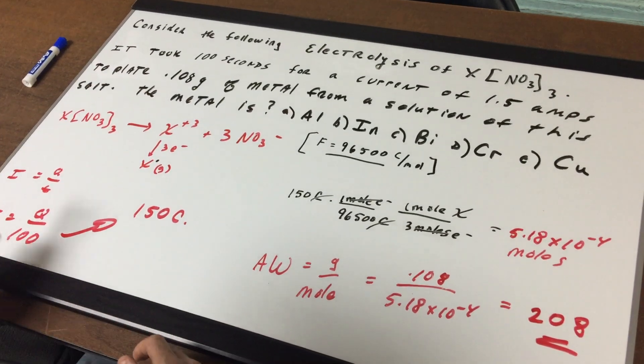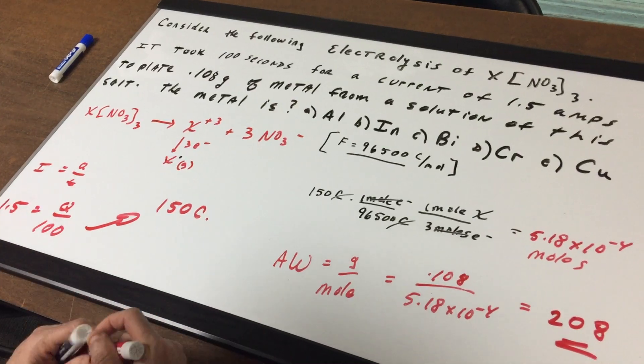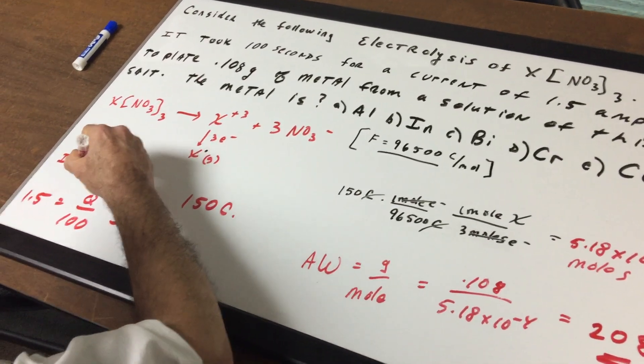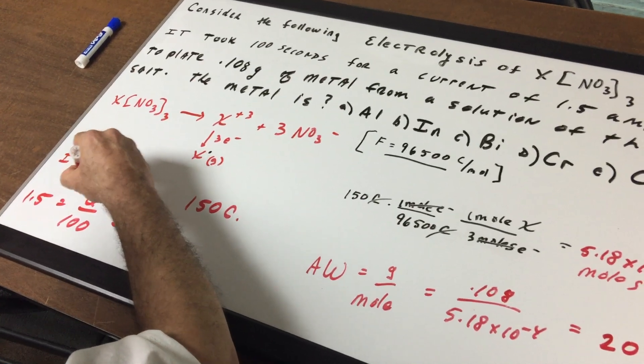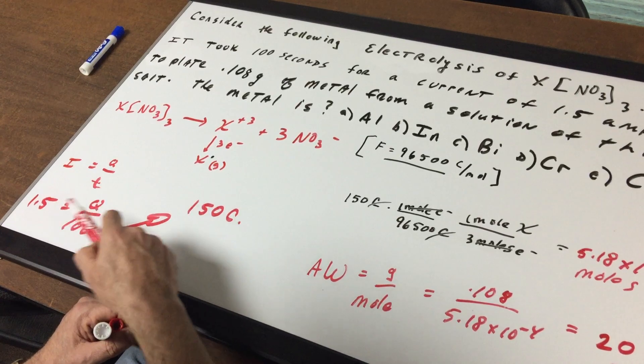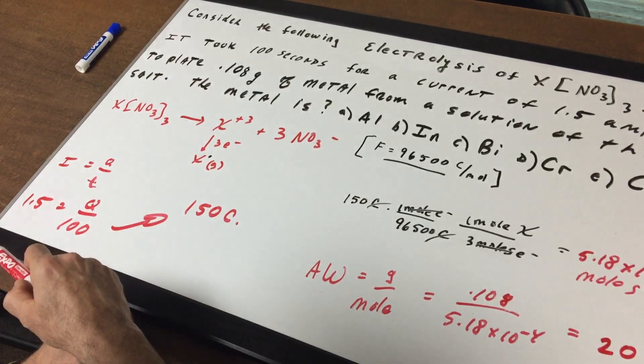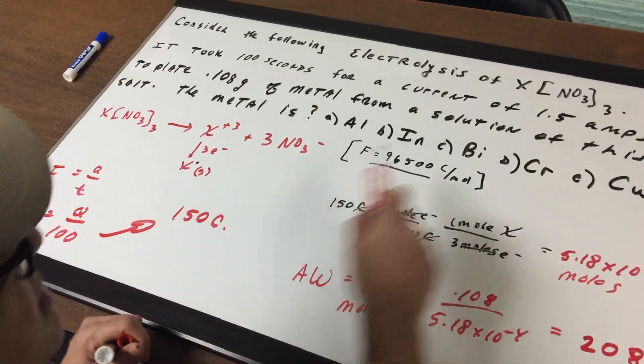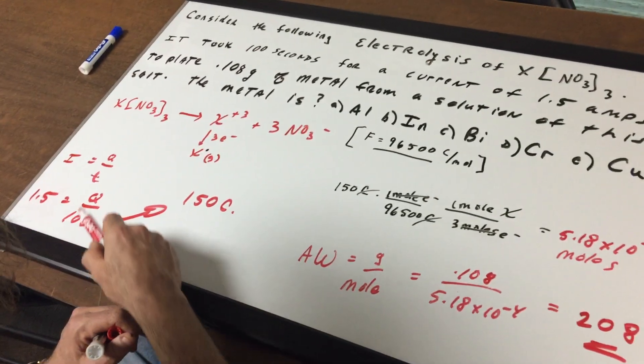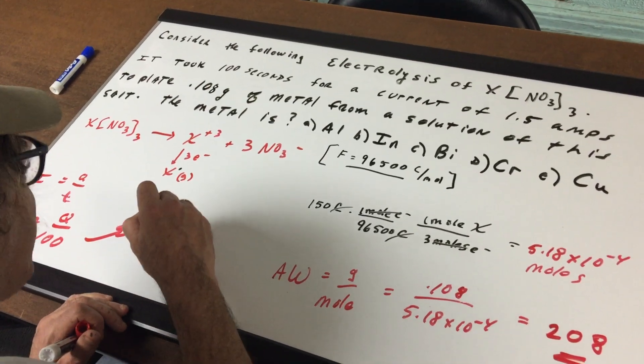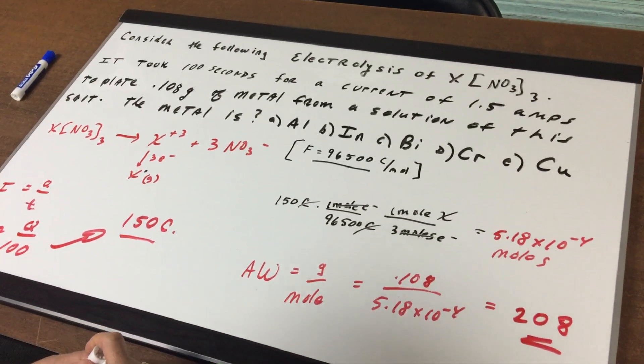Where do I begin? The first formula you would use is what I call the I quit formula, which says that I equals Q over T. I is for amps, Q is for charge, and T is for the time in seconds. Let's plug in some numbers. Current is 1.5, we don't know Q, the time is 100 seconds. And that gives me 150 coulombs of charge.